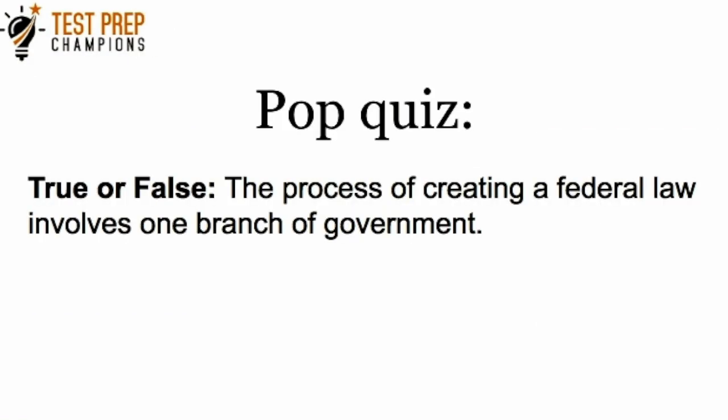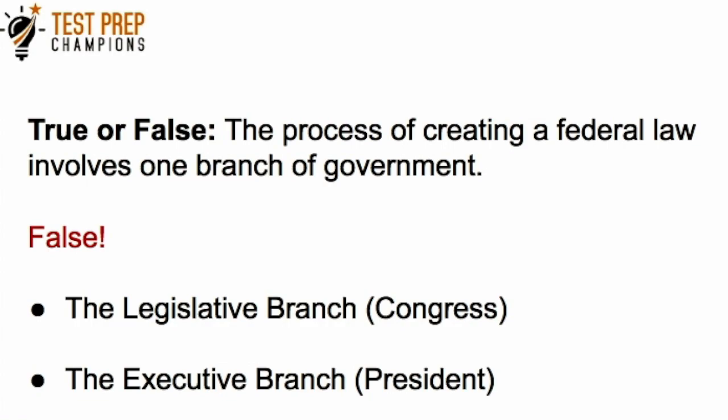Let's test your understanding. True or false: 'The process of creating a federal law involves one branch of government.' This is false. The process of creating a federal law involves Congress, and if both chambers vote in favor of the bill, it goes to the president. So technically two branches are involved — the legislative branch and the executive branch.